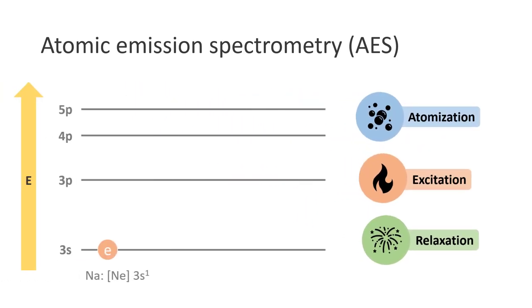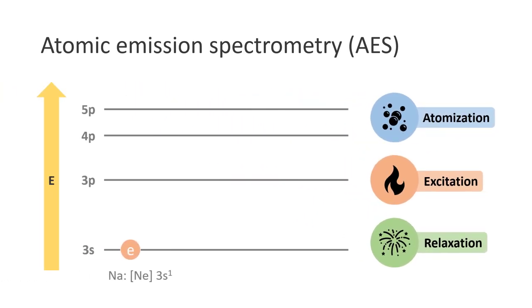Let's take a closer look at sodium atom as an example. Sodium has one valence electrons in the 3s orbitals. If we supply enough heat or electrical energy, we can promote the electrons from the ground state 3s orbitals to 3p, 4p, or 5p excited state orbitals.